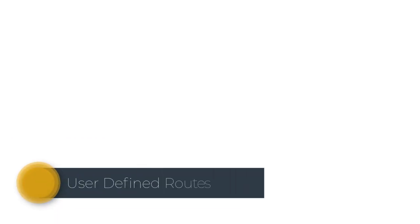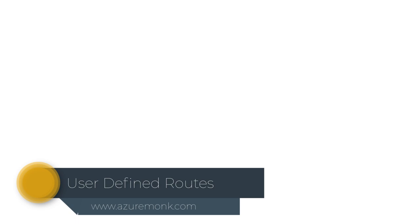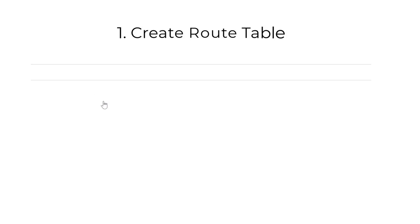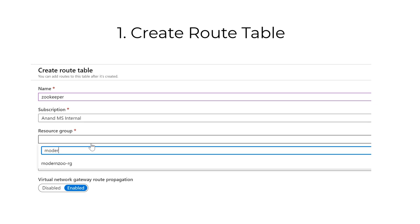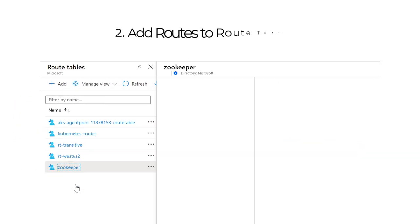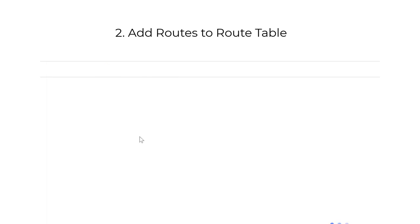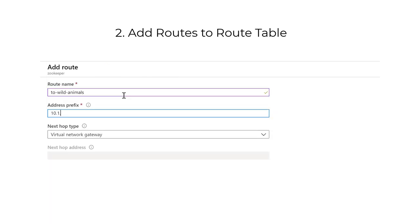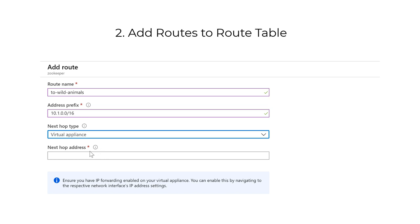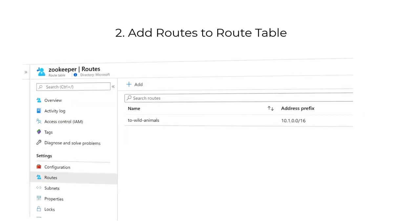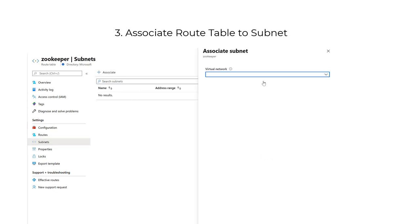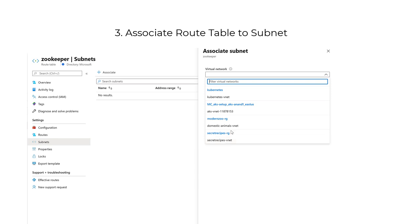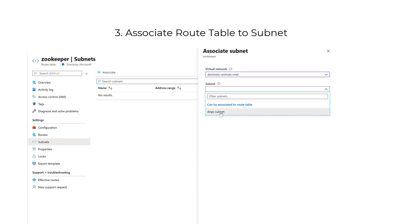Now let's see how the zookeeper can accomplish his requirements using user defined routes. User defined routes are created as follows: first, a route table is created. Second, routes are added onto the route table. Third, the route table is associated to a subnet. Remember, user defined routes can only be associated to a subnet and not a network interface card directly or a virtual network.